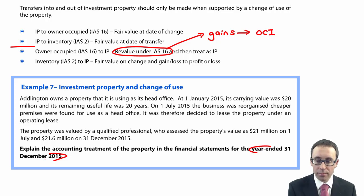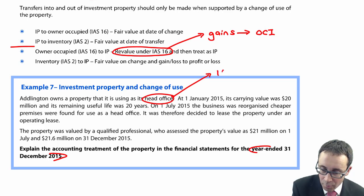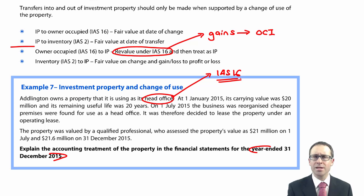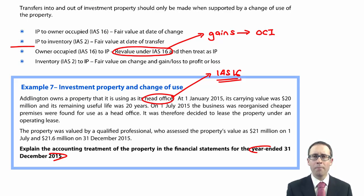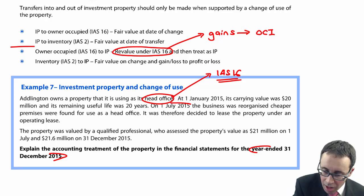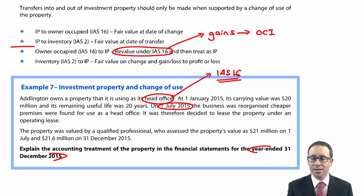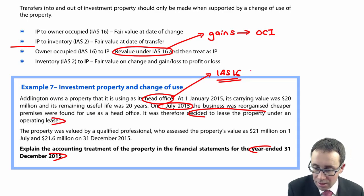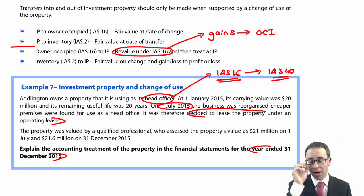Adlington owns a property that it is using as its head office — so that will be IAS 16, property, plant and equipment. On the 1st of January 2015 its carrying value was £20 million and its remaining life was 20 years. On the 1st of July 2015 — so mid-year, six months in — the business was reorganised, cheaper premises were found for use as a head office, and the company decided to lease the property under an operating lease. So it was IAS 16; it is now IAS 40 from the 1st of July 2015 — six months as PPE, six months as investment property.